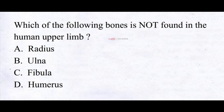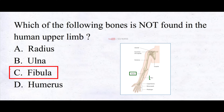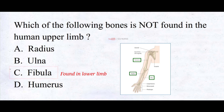Which of the following bones is not found in the human upper limb? A. Radius, B. Ulna, C. Fibula, D. Humerus. Radius, ulna, and humerus are the bones found in the upper limb, whereas the fibula is a bone found in the lower limb.